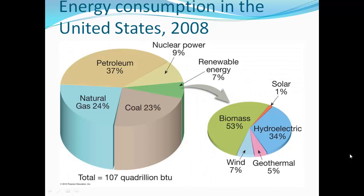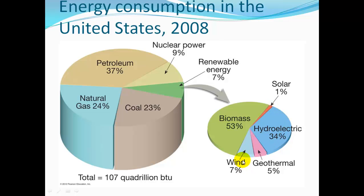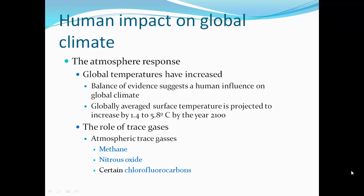Energy consumption in the United States — data from 2008: about 37% from petroleum, 24% natural gas, 23% coal, 9% nuclear power, and 7% renewable energy. Of those renewables, half was biomass, solar 1%, hydroelectric 34%, geothermal 5%, and wind 7%. Since 2008, we have probably seen a lot of coal replaced by renewables, with solar, wind, and geothermal/hydroelectric all taking larger shares of the pie.